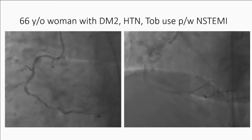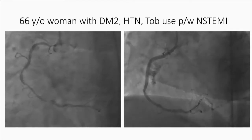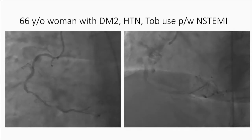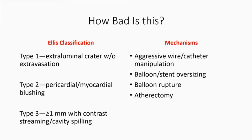And our subsequent angiography looks like this. You can see there's perforation within the mid-stented segment with myocardial blushing and a little bit of superior washout. The Ellis-Sievert classification would label this a type 2 coronary perforation where you see pericardial and myocardial blushing. A type 1 would be essentially a vessel disruption — an extraluminal crater formed at the site of injury without frank extravasation. And type 3 are those with essentially free-flowing blood into the pericardial space or spilling into a cavity.